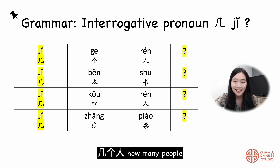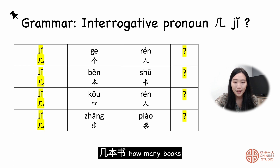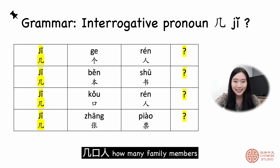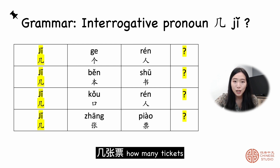几个人 — how many people. 几本书 — how many books. 几口人 — how many family members. 几张票 — how many tickets.